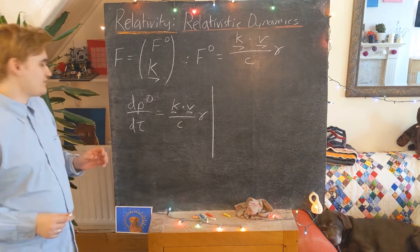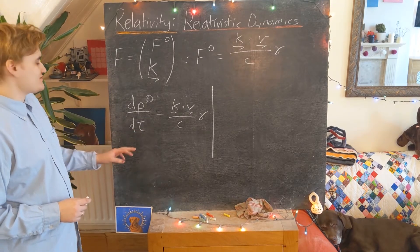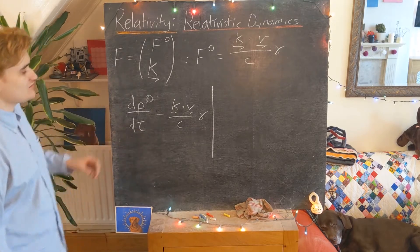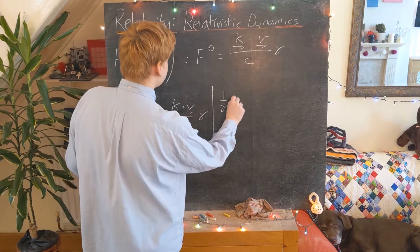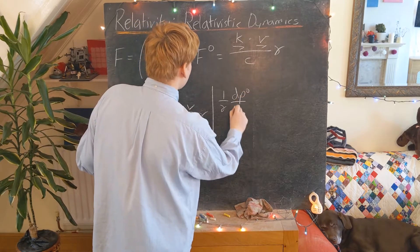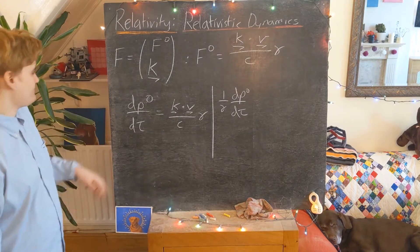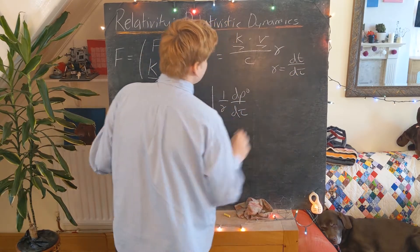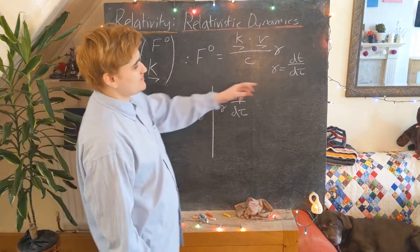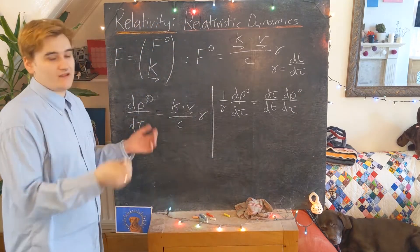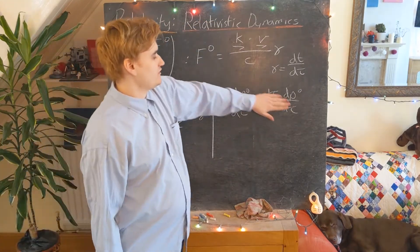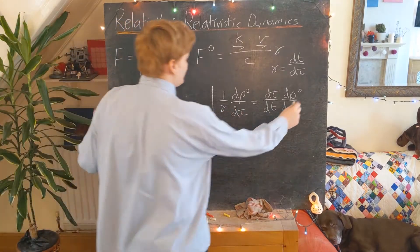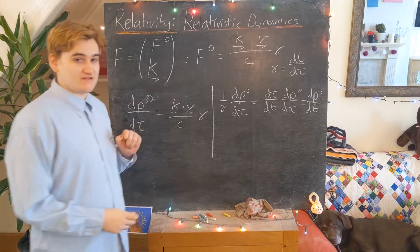Now I'm going to manipulate this expression to turn this tau derivative into a t derivative. There are a number of ways that you can see this. You could use the chain rule on the left-hand side and then cancel the factor of gamma, or you could divide by the factor of gamma and then use another chain rule. I'll say one over gamma dP0 by dtau. If I remember how we define gamma as being dt by dtau, the inverse of gamma is just dtau by dt. We can use the chain rule again, and we can realize that this is just the derivative with respect to t.